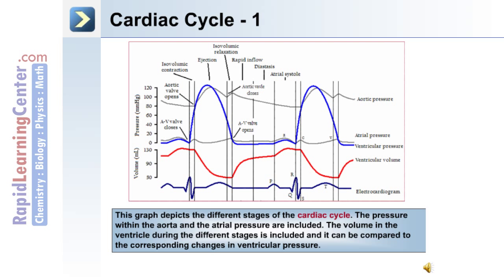This graph depicts the different stages of the cardiac cycle. The pressure within the aorta and the atrial pressure are also included. The volume in the ventricle during the different stages is included and can be compared to the corresponding changes in ventricle pressure.